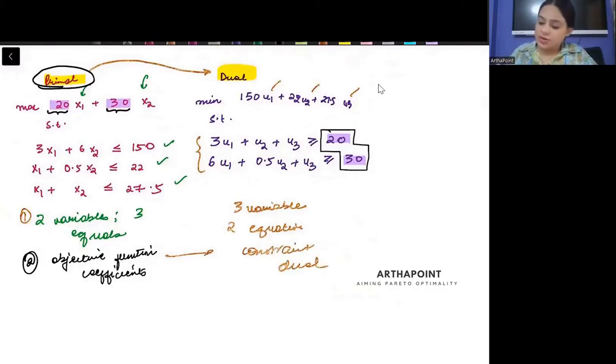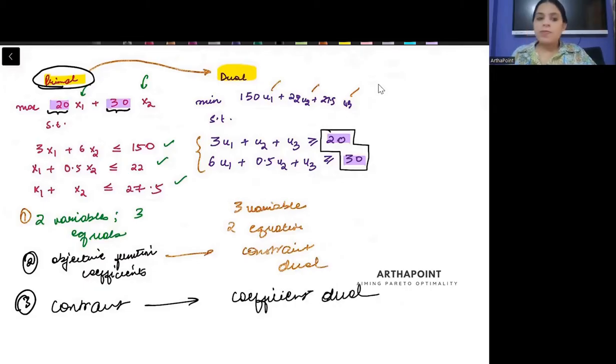Then we have a third part. The right-hand side of the constraints will become coefficients of the dual. You see this: 150, 22, 27.5. Look here - 150, 22, 27.5. It will become the coefficients of the dual. So these three coefficients will be formed in the dual with three variables: 150u1 plus 22u2 plus 27.5u3.